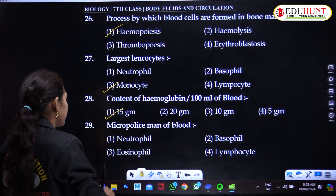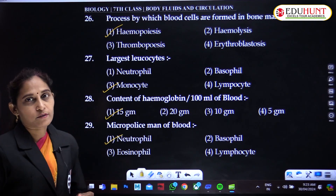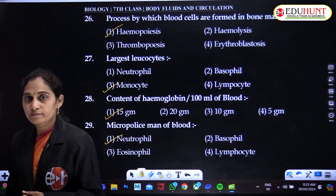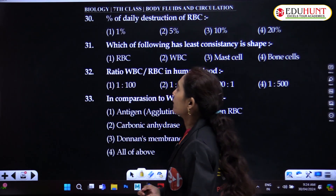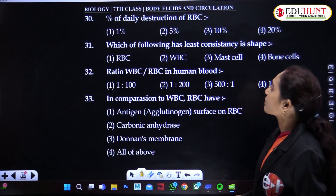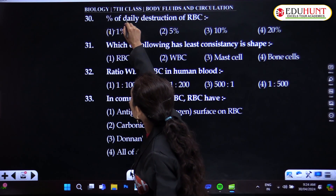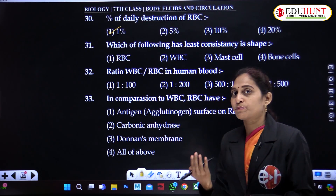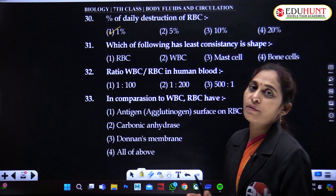The microphage of blood is neutrophil, whereas the macrophage is monocyte. Percentage of daily destruction of RBC is around 1% — 1% is destroyed and 1% is formed, so the RBC count remains normal on average.